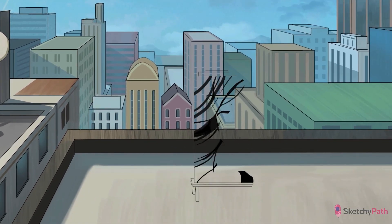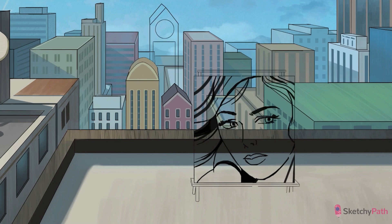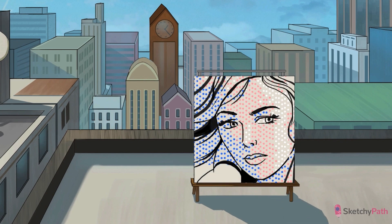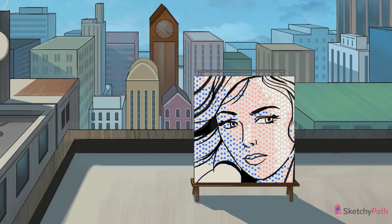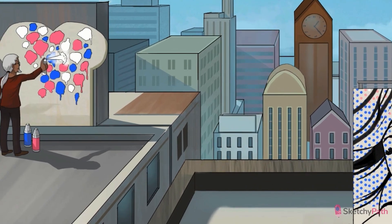In contrast, chronic myeloid leukemia, or CML, is characterized by the proliferation of more mature cell types and, as a result, tends to have a more indolent course. To convey a chronic indolent progression of CML, we've brought in our recurring chronic grandfather clock. And since CML involves more mature cell types filling the blood, notice that Lichtenstein's Bende dots are fully formed, perfect circles. Just like in AML, we've made the dots pink, white, and blue to remind you that we're dealing with granulocyte progenitor cells — that means immature eosinophils, neutrophils, and basophils.